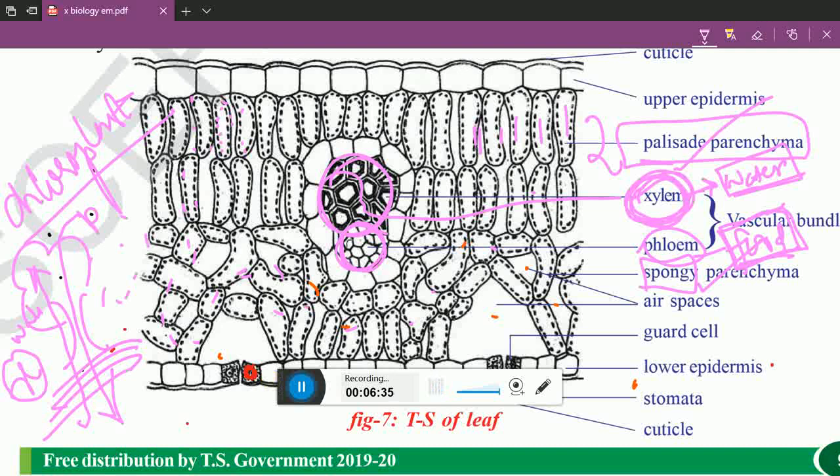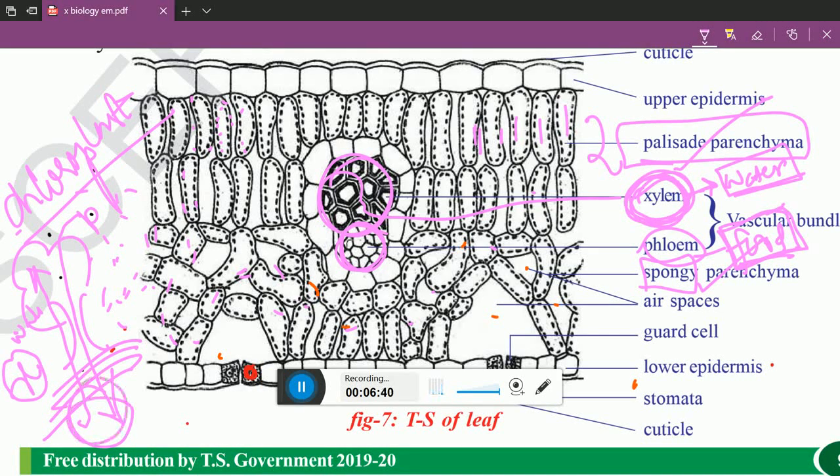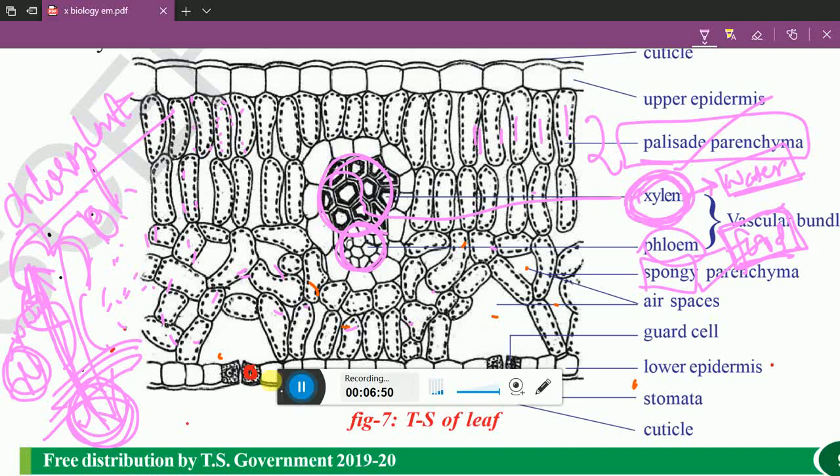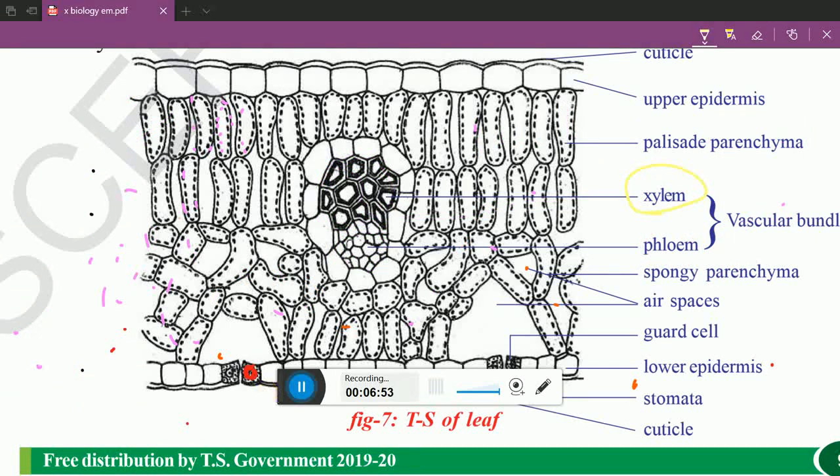Phloem will help food transport from upper region to lower region. Whereas, xylem will help water transport from lower region to upper region. Water is present inside the soil. This xylem will conduct the water from opposite direction, beyond gravity. And phloem will conduct food transport due to gravity. Combination of these two is called as vascular bundle.